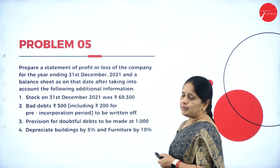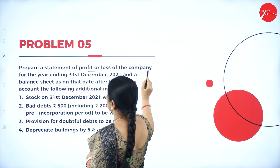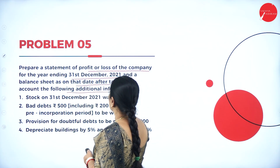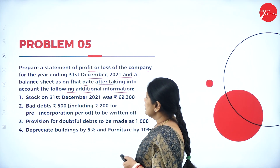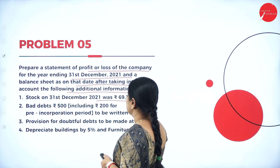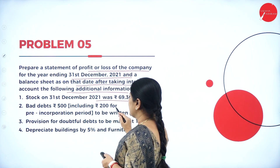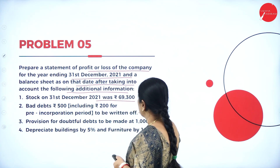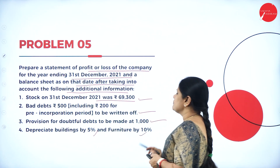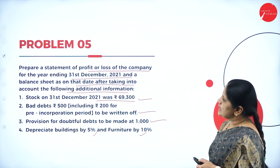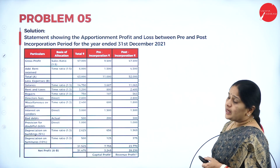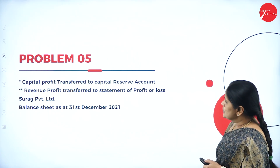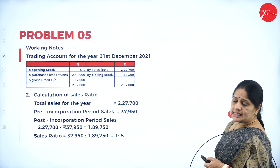We are asked to prepare a statement of profit or loss for the year ended and a balance sheet as on that date, taking into account additional information: stock on 31st December 2021 was 69,300; bad debts of Rs. 500 including Rs. 200 for pre-incorporation to be written off; provision for doubtful debts at Rs. 1,000; depreciate buildings by 5% and furniture by 10%. Before writing the format, we have to find the time ratio and the sales ratio.